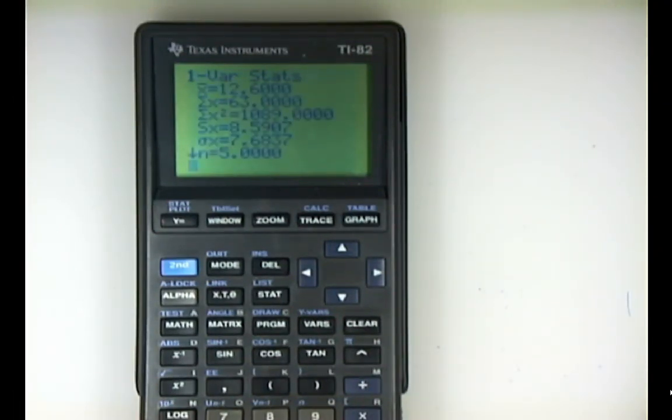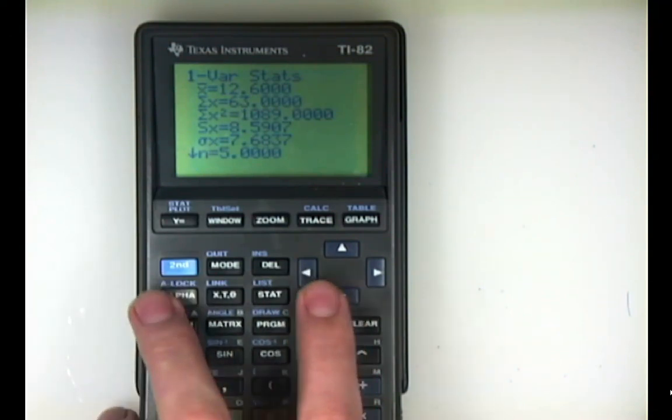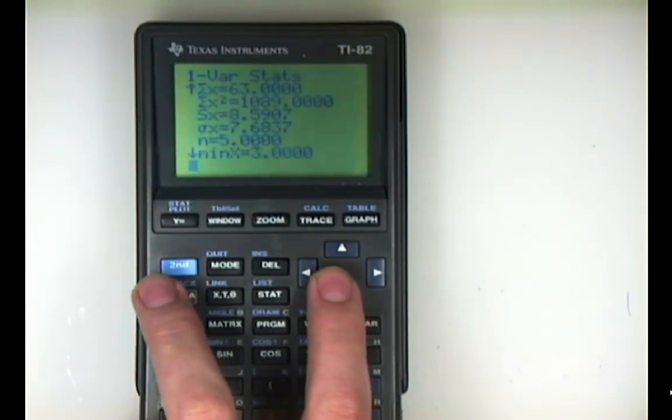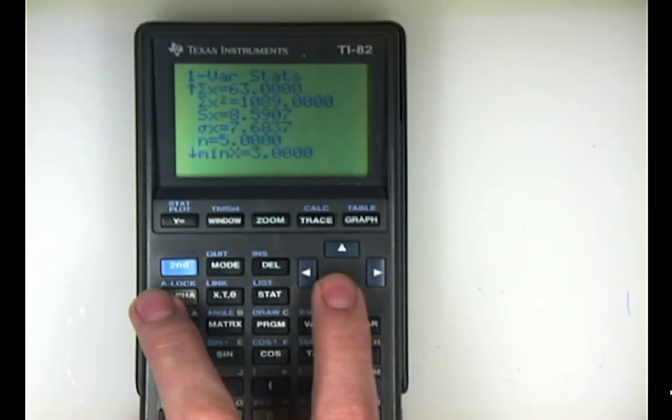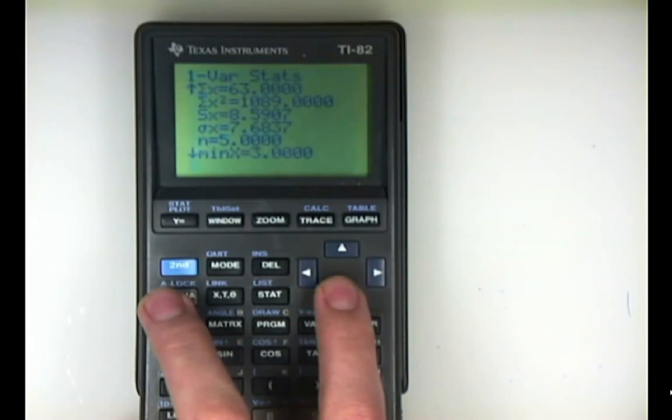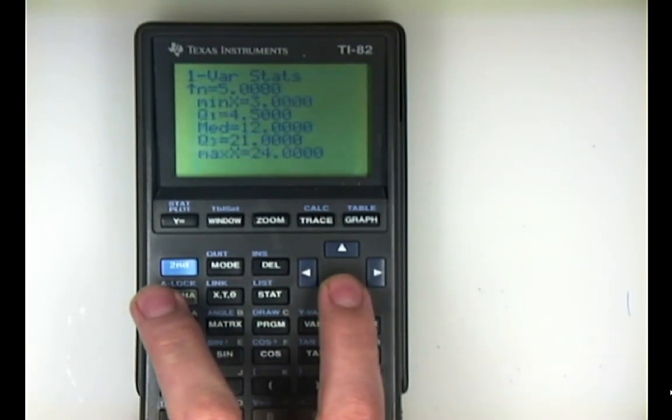You've got your x bar, your sum of x's, sum of x squared. Sx is your standard deviation. Sigma x is something you usually want to ignore in elementary statistics. N is 5, min x is 3, Q1, median or Q2, Q3, and max.